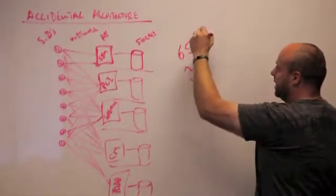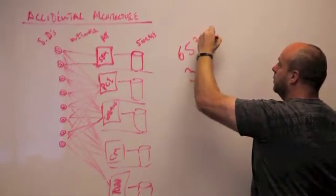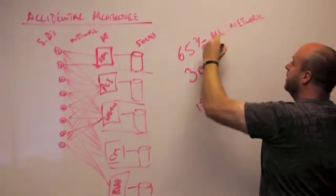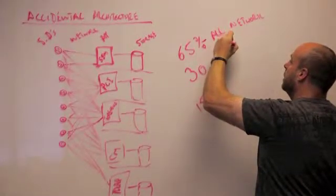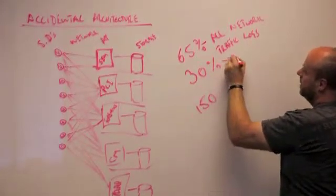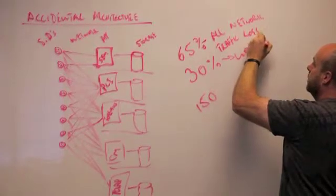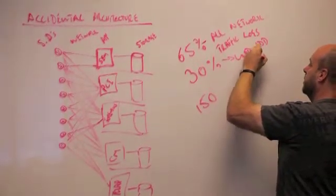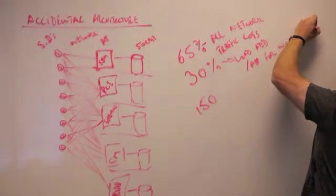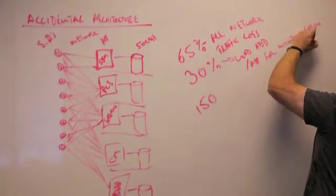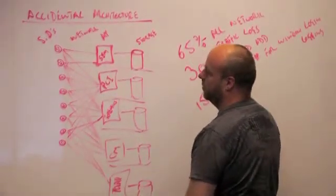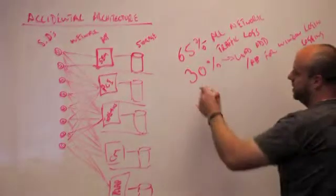A customer told me that 65% of all the network traffic was logged. Another customer told me that 35% load add per app for Windows login. So, every single one of these guys here, basically, if you've got Windows, will need Windows login, and every single one of them will actually drive an additional 30% load onto it.